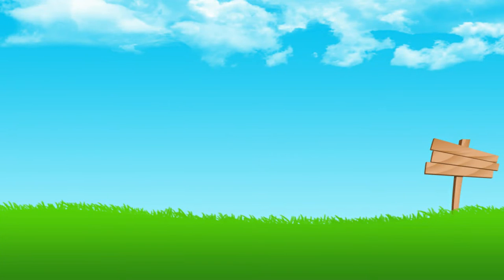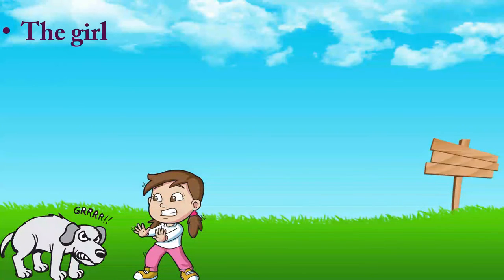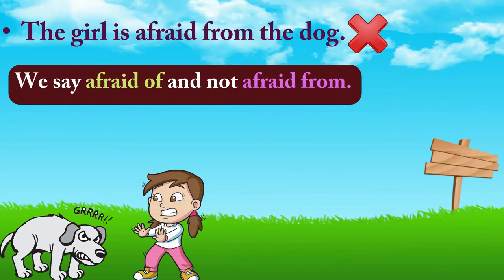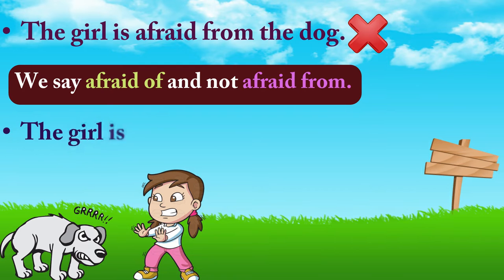Let us look at this one: 'The girl is afraid from the dog.' This is incorrect. We say 'afraid of' and not 'afraid from.' Please repeat the correct sentence after me: The girl is afraid of the dog.